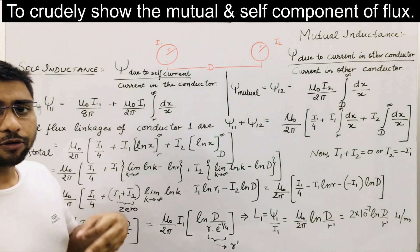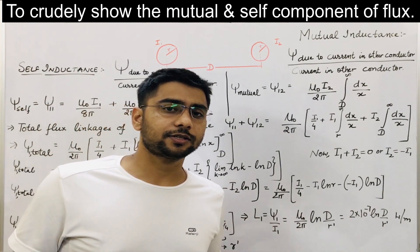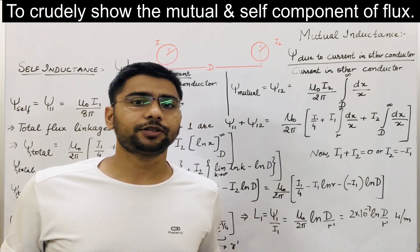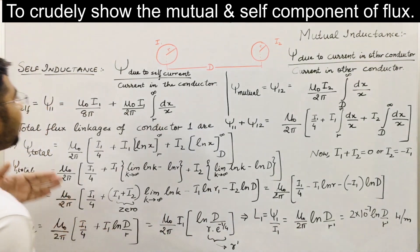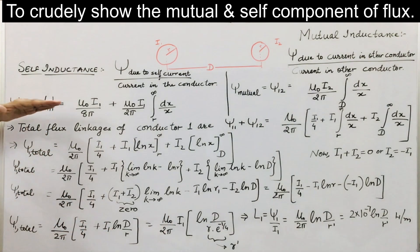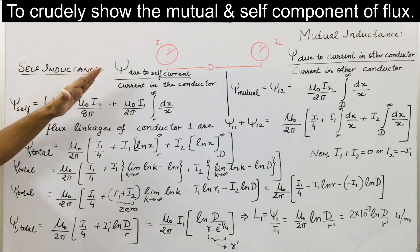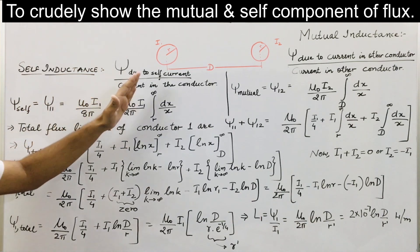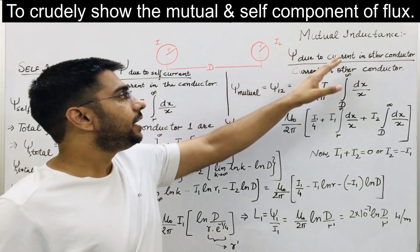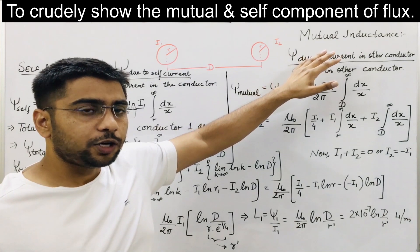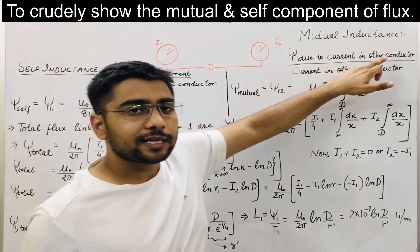As we have already studied in previous lectures or in network theory: self inductance is simply the inductance of a conductor due to current in itself, and mutual inductance is the inductance of a conductor due to current in another conductor.